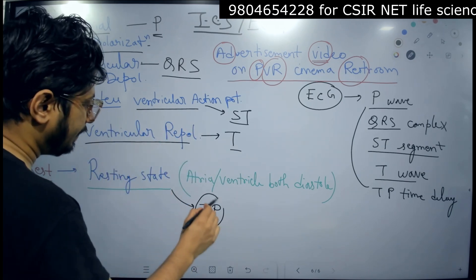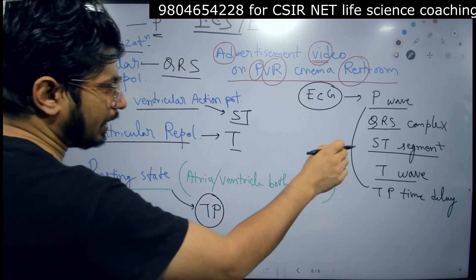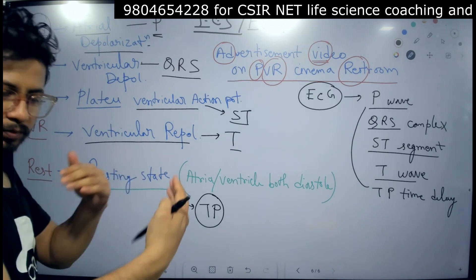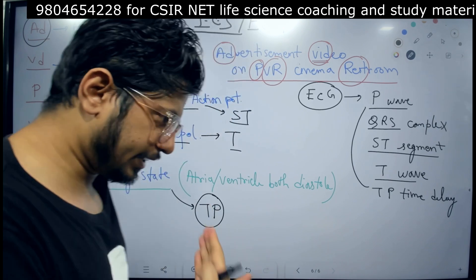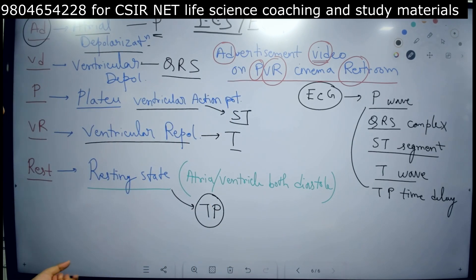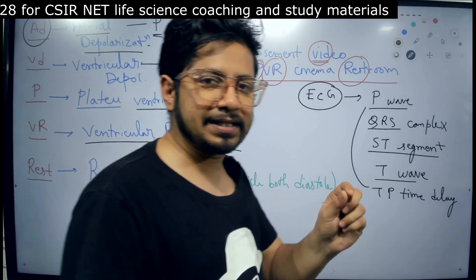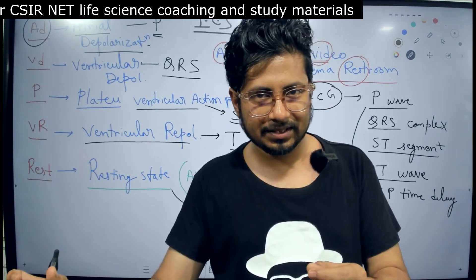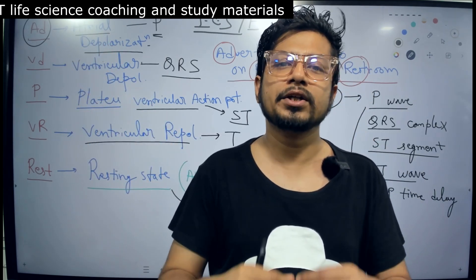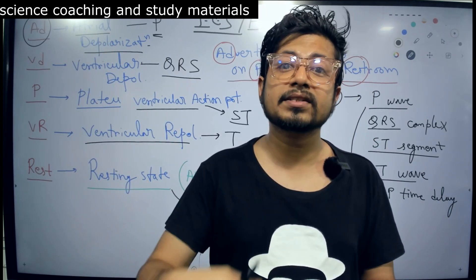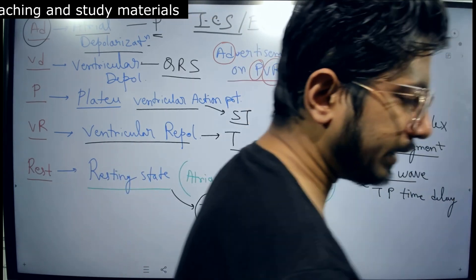And last, TP is a time delay present between another. So, between the two separate or consecutive action potentials generated in the heart. Two consecutive conduction systems generated in the heart. That is a resting state. This is how you can easily tag along ECG components of the graph with the different events that take place during the process of intrinsic conduction system. One bonus point is also there.